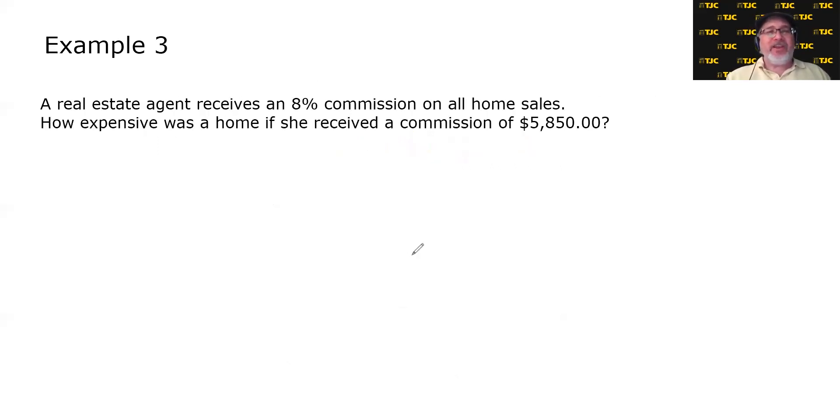Example three. A real estate agent receives an 8% commission on all home sales. How expensive was a home if she received a commission of $5,850? Some of you may work on commission, so you know how that works. You sell a certain dollar amount of a product, you calculate a percent of that, and that's how much you get paid on commission. In this case, the agent is receiving an 8% commission, and they are getting $5,850. So how would we rewrite this problem using as few words as possible? 8% of what is $5,850?